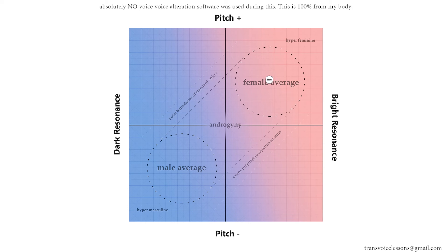So if I start in the middle of the female average and you're looking for those sort of dark, rich female voices, what you're gonna do is just bring the pitch down right until you're sort of on the outer boundaries of where you would typically see voices. This is sort of a more butch female kind of sound — my pitch is pretty low, I'm still bright. The lower I go in order to stay female, I'll need to get brighter and brighter and brighter until here I'm at the very lowest pitch I can produce, but I'm as bright as I can possibly be.